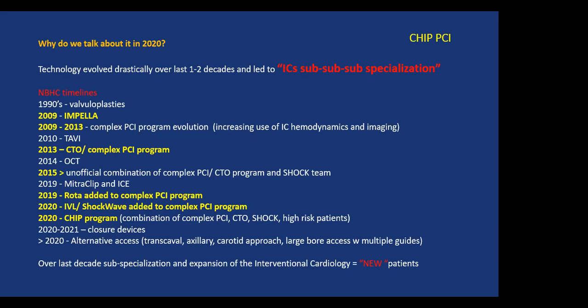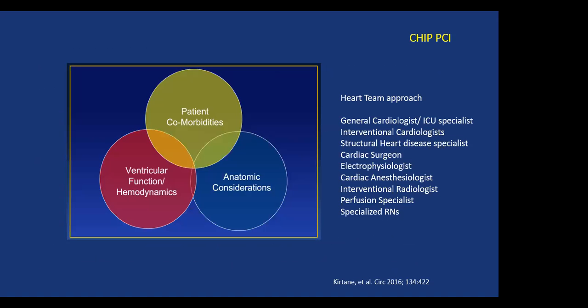Over the last decade we've started to treat not only the patients we considered very high risk in the 80s, but even new patients — such as someone with aortic stenosis and critical left main disease that we would never have considered bringing to the cath lab. To be a high-risk but indicated patient, there are three major components: patient comorbidities, LV function and hemodynamics, and coronary anatomy considerations.